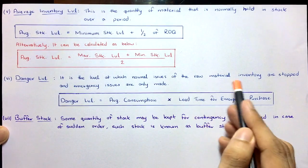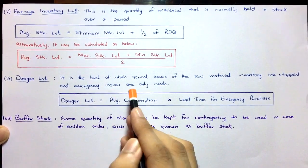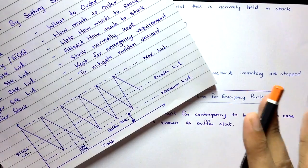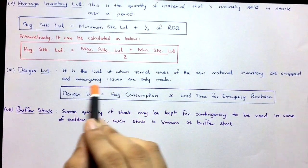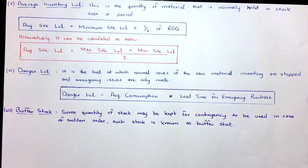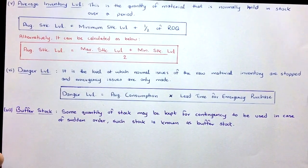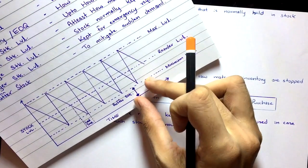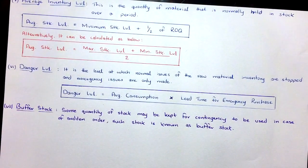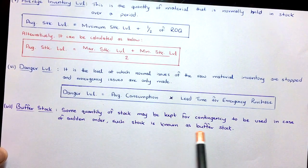Danger level is the level at which normal issues of raw material inventory are stopped and only emergency issues are made — our stock has gone below the minimum level. Formula: Average consumption × Lead time for emergency purchases. For buffer stock, there is no formula — it will be given in the question. Buffer stock is the minimum inventory below the minimum level, kept for contingency in case of sudden orders.